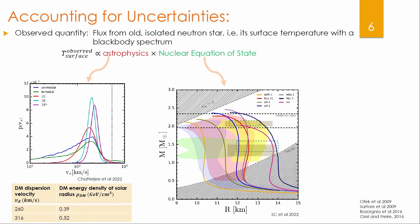I'll go through the uncertainties we account for. The observed quantity is the surface temperature, which depends on several astrophysical quantities. From population synthesis models for old neutron stars in Milky Way-like galaxies, I show a probability distribution of neutron star velocities in the solar circle — these are normalized PDFs — and we select some representative PDFs from two papers. We also take values for dark matter ambient dispersion velocity and energy density from hydrodynamical simulations of Milky Way-like galaxies that give the dark matter distribution in the solar circle, from Bosogna et al.